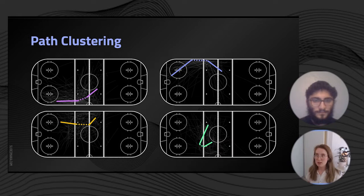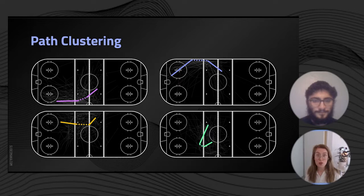Here we can see that our path clusters can then be summarized into these core main routes. The pink route is very much going up the wing and then lane changing across the center. Blue is very similar but on the opposite wing, whereas yellow is a little bit more going through the center lane and then maybe swinging towards a wing. Green represents largely our neutral zone recuperation strategies.